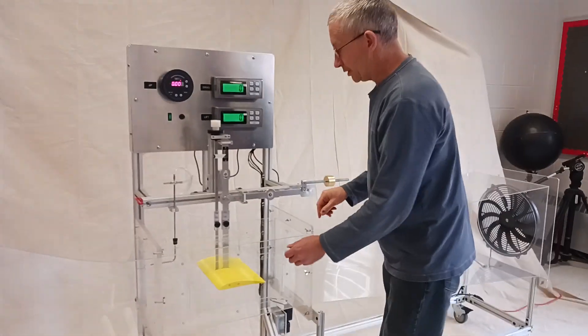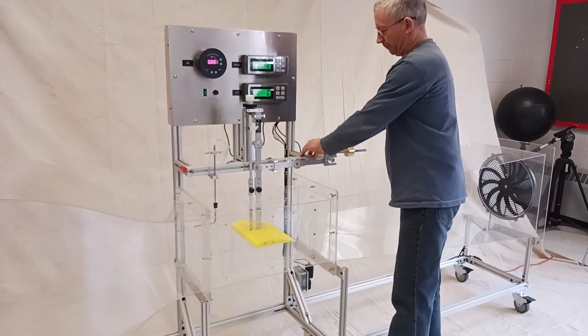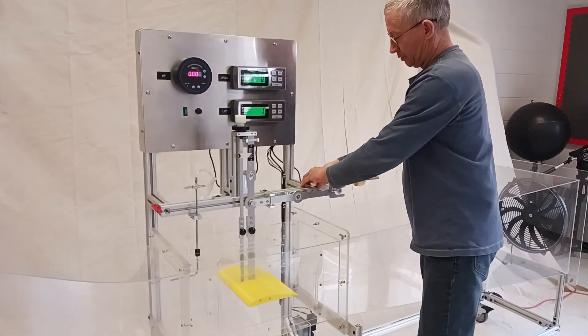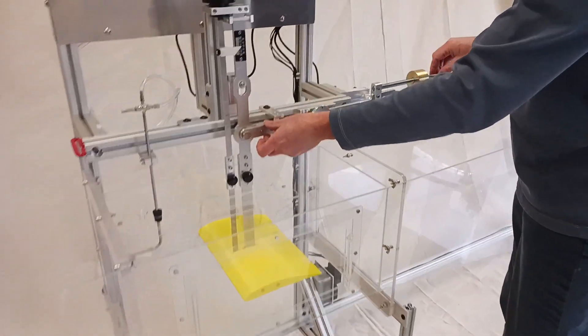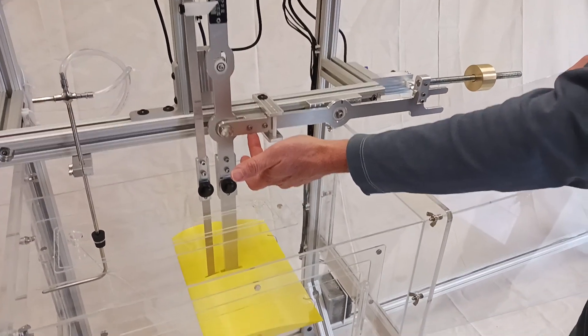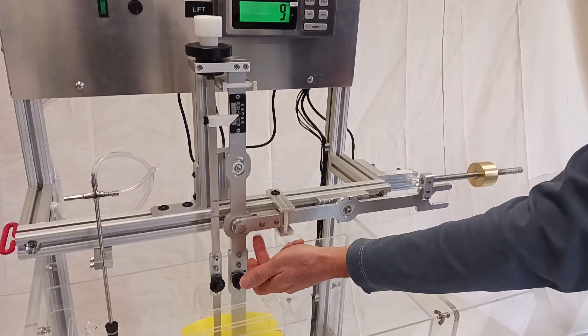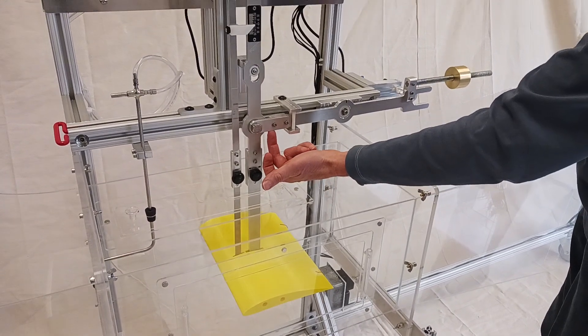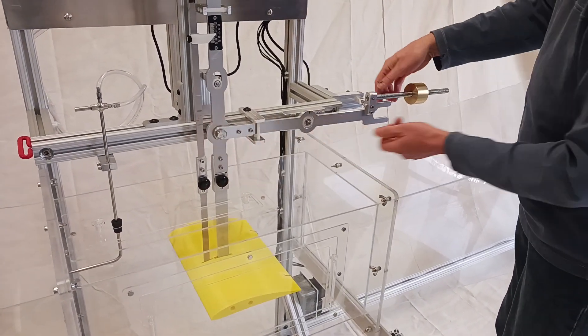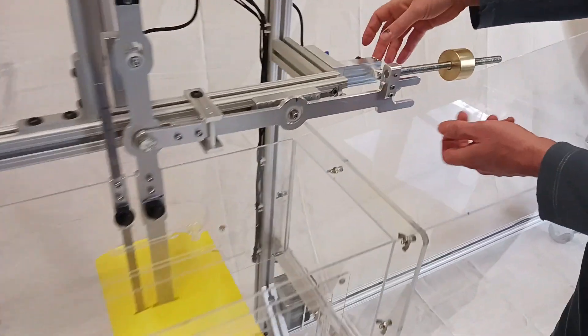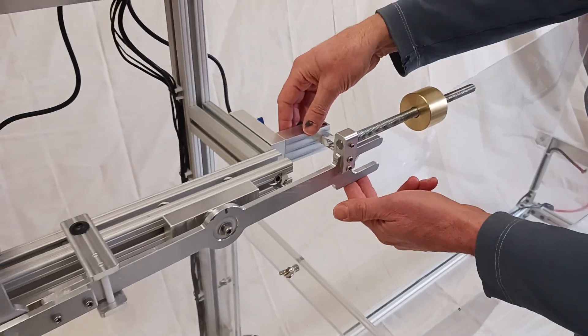And then just to show a little bit how the load cells work, I'm going to loosen this up just so we can see some motion here. And so now this is kind of floating. So if you push up on this, you can see that if I push up, this is equivalent to pushing up on the airfoil. If I push up on the airfoil, that pushes down on this lever over here. And when the load cell is in place, which I just took it out, it would push down on that load cell.